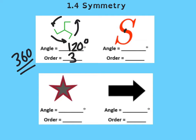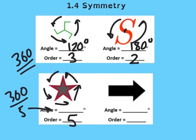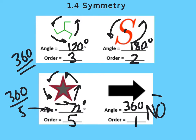Here, if I was to turn this shape, it would land once and twice, so its order would be 2, making its angle 180. There are 5 points to the star, and each time I would land onto it being symmetrical, so the order is 5. If I take 360 and divide it by 5, that angle is 72 degrees. This last shape has an order of 1 and an angle of 360, and has no rotational symmetry because of its design.